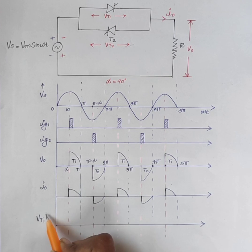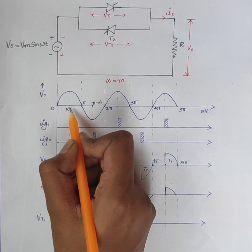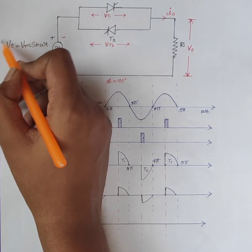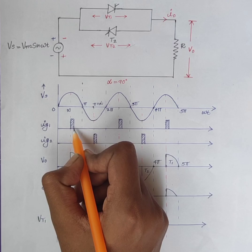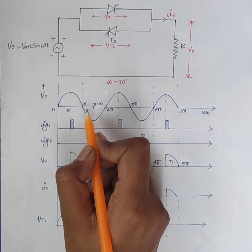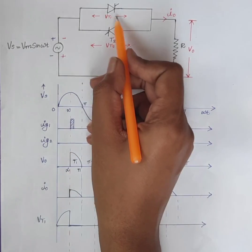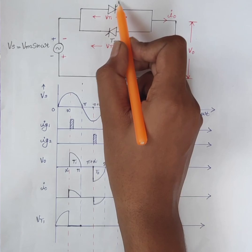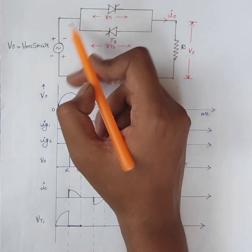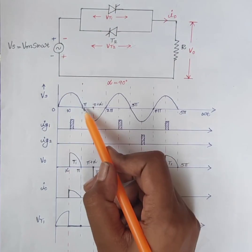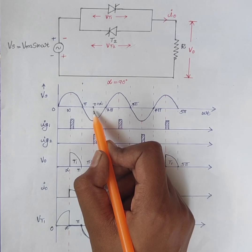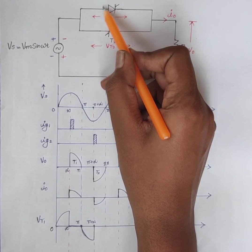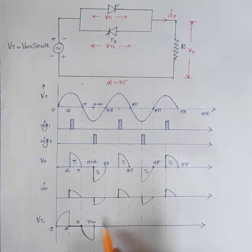Next is the voltage across thyristor T1. From 0 to alpha, T1 is forward biased and the thyristor voltage VT1 is equal to Vs. From alpha, firing pulses are given to T1. Therefore, T1 conducts and VT1 is equal to 0. From pi to pi plus alpha, T1 is reverse biased by the source voltage. Therefore, VT1 is equal to Vs. From pi plus alpha to 2pi, T2 conducts and acts as a closed switch, short-circuited. Therefore, the voltage across the thyristor VT1 is 0.